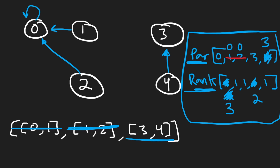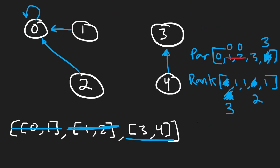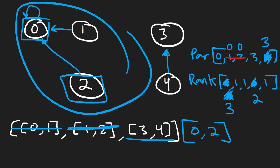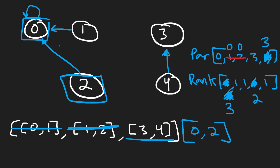Each time we made a union operation, we decremented our initial count of five. We performed three unions, giving a result of two connected components. If we had an extra edge like zero-two, we'd find both have the same root parent zero, meaning they're already connected. We don't decrement — we return immediately without performing a union. That's the main idea of the algorithm. Once you've coded it a few times, it becomes pretty straightforward since most union find problems are similar.